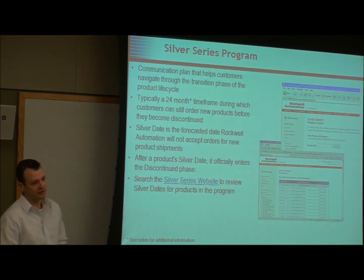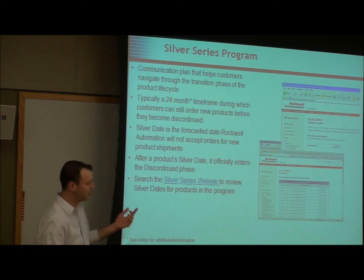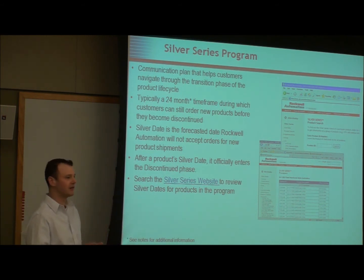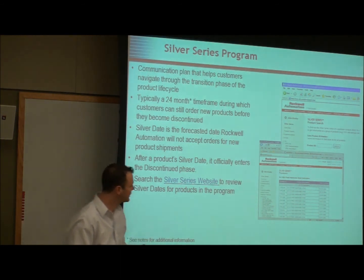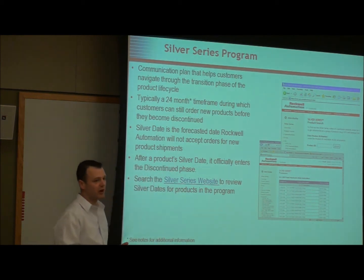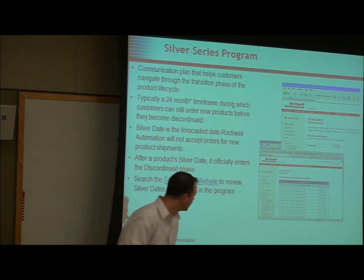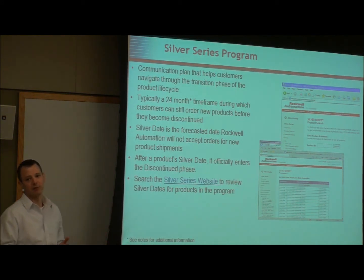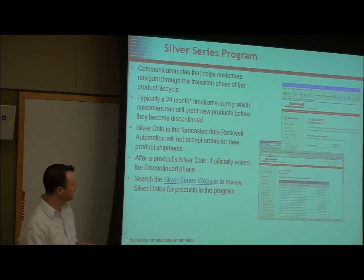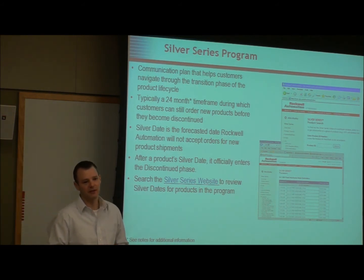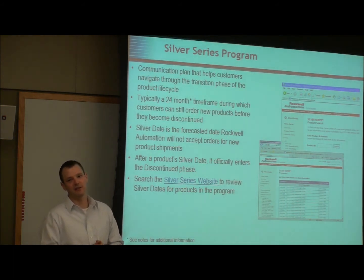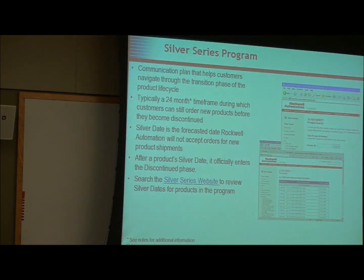You can check your Silver Series date for anything in the Silver Series program by going to the Rockwell website. In the upper right-hand corner search bar, just type in 'silver.' It will pop up as one of the first items. Put in the product ID — for example, type in 1747 and you'll see some of the older SLC processors come up. That date shown is the discontinued date — meaning the date it exits Silver and goes to discontinued, not the date it enters Silver.